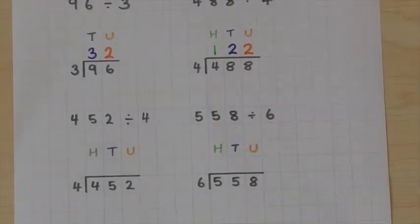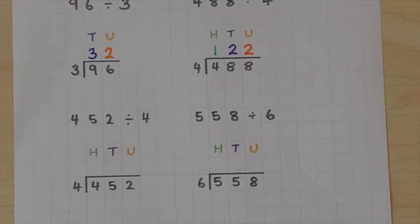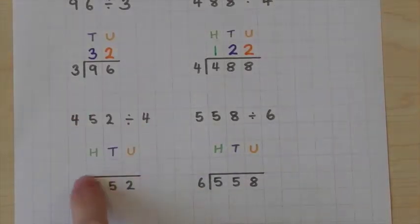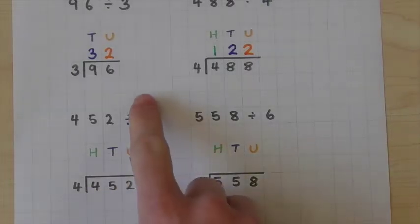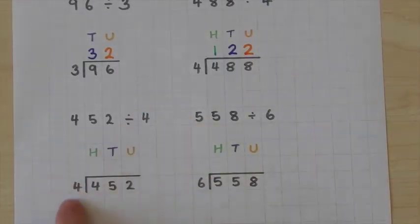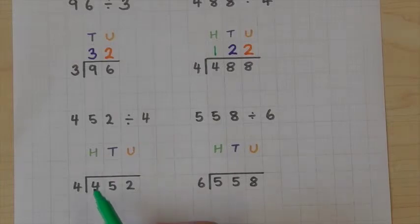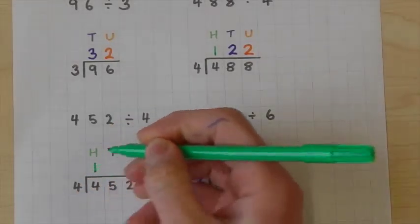Sometimes things get a little more complicated and we can see that in our next example. Once again, we are starting in exactly the same way — putting our dividend inside the division bar and our divisor outside of the division bar, swapping our numbers around. Once again, starting on the left hand side in the hundreds column: 4 goes into 4 one time exactly.